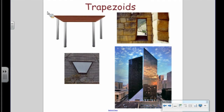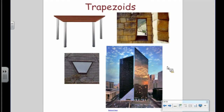Here are some trapezoids in the real world. This building is actually in Houston — you see that trapezoid right there? I thought that one was just really pretty. We have a trapezoidal window, a trapezoidal table, and then a trapezoidal cutout in this ancient ruin.